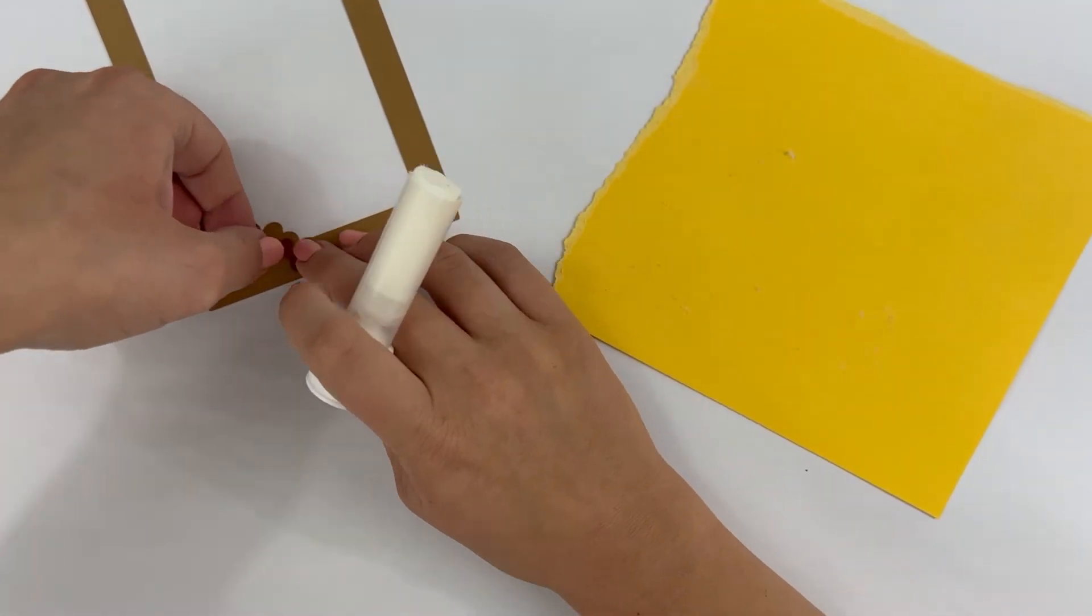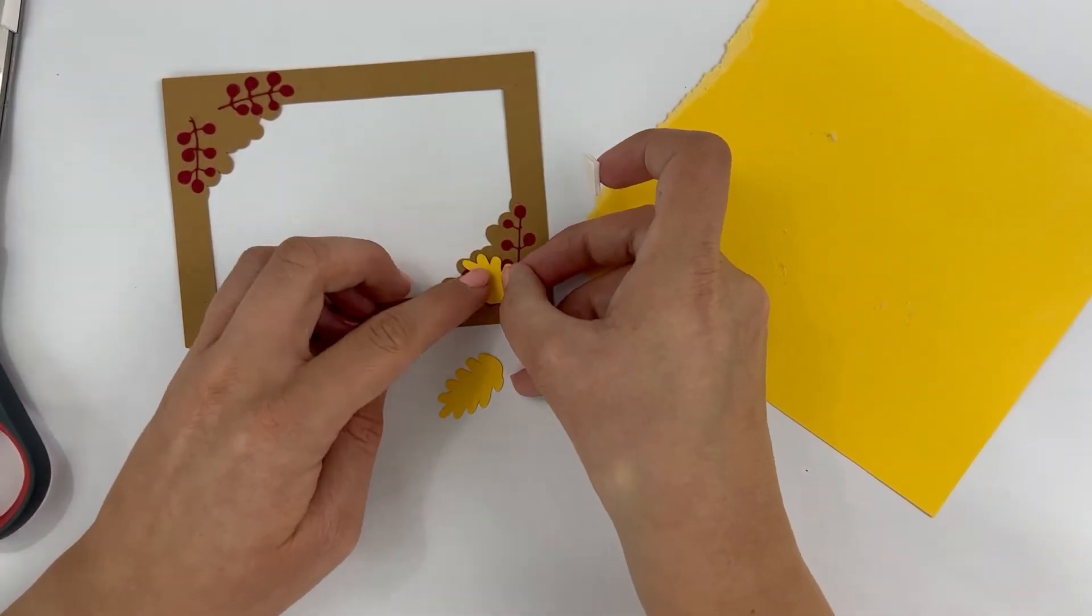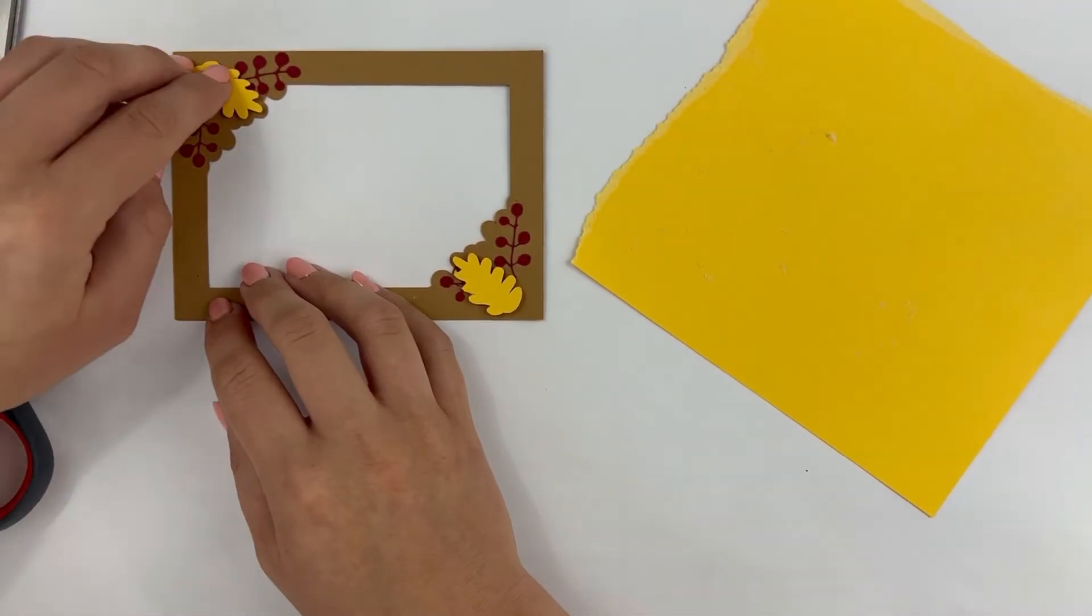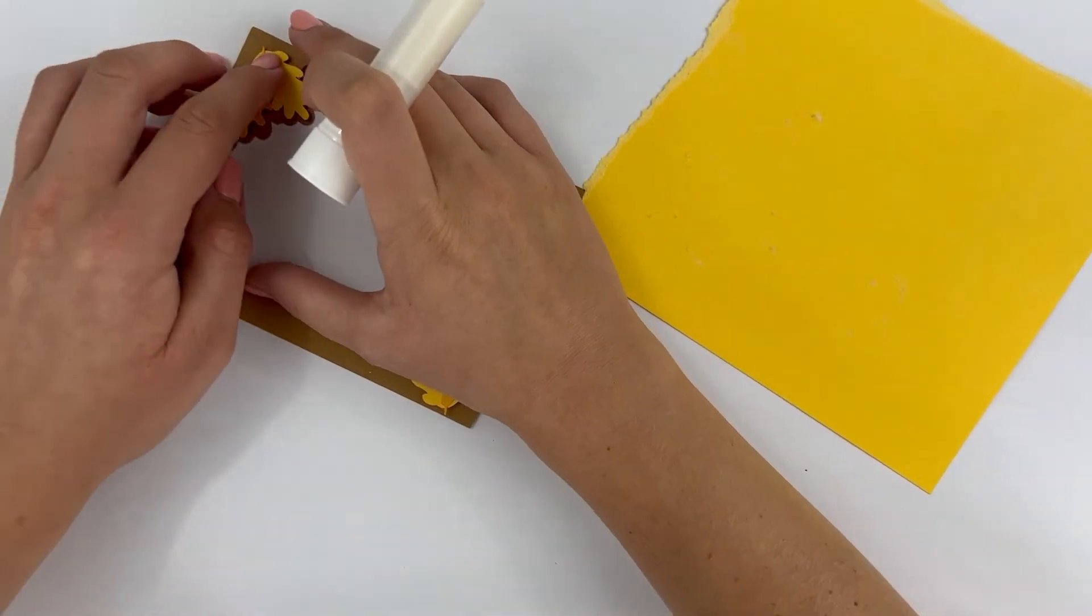In order to achieve this effect, I simply use 3D adhesive tape on the back of each layer. You can also use pop dots. Make sure that you place the layers in the correct order. The layers should come together like steps that move inward.